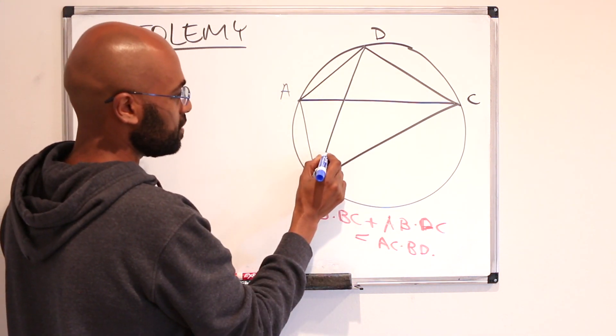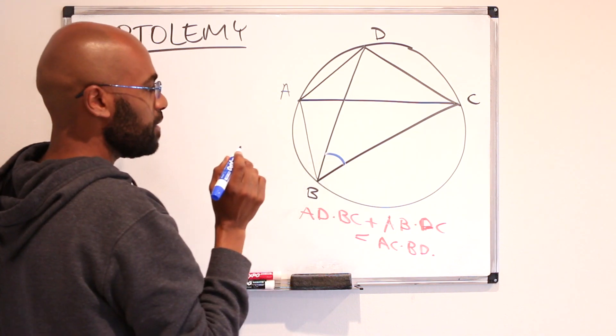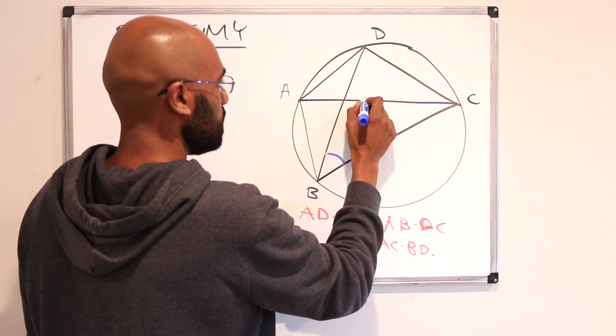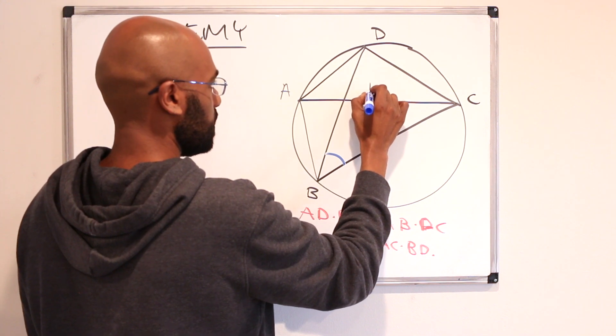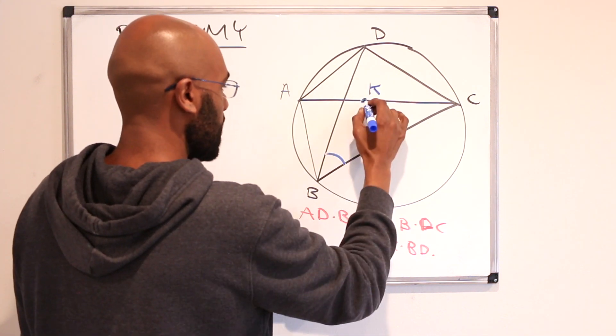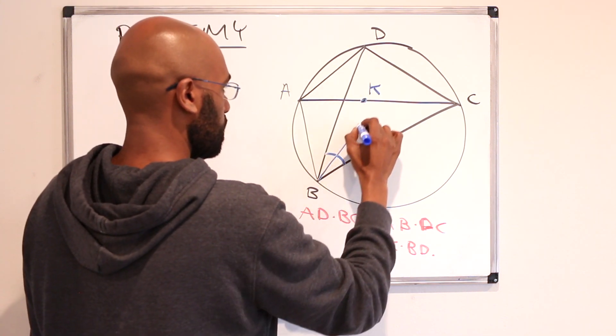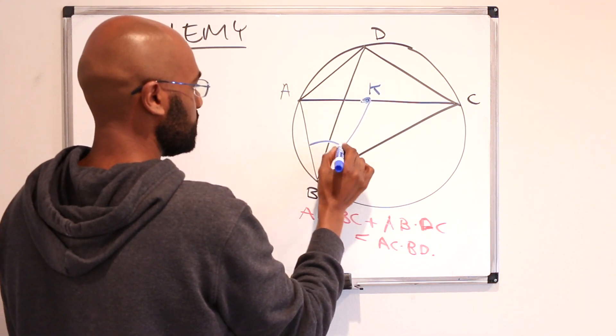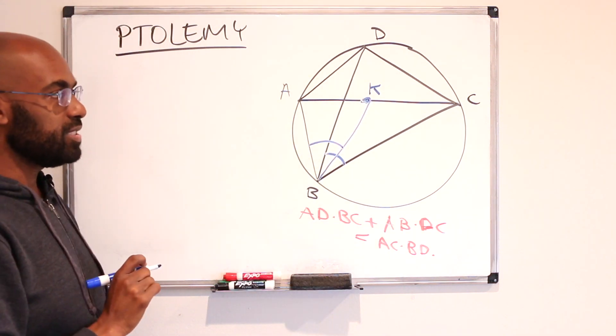It says consider this angle DBC and then place a point on AC. I'm going to call it K so that the angle ABK is the same as this angle DBC.